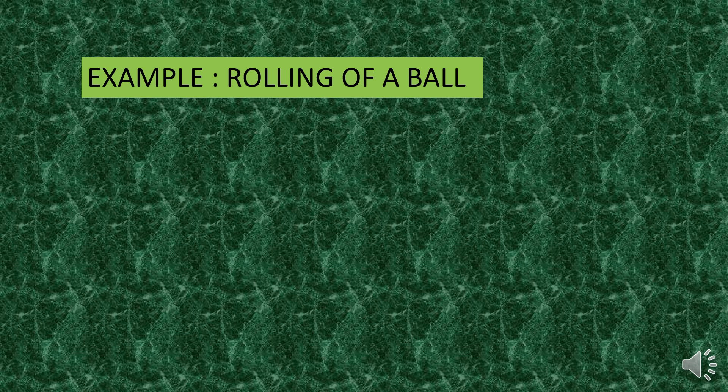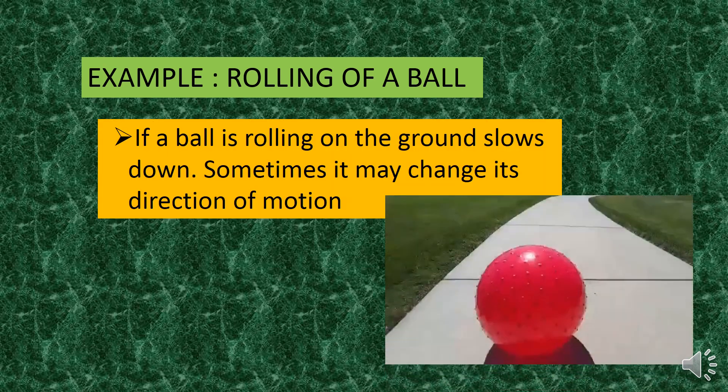The first example is rolling of a ball. If a ball is rolling on the ground, it slows down and sometimes it may change its direction of motion. If you observe a ball rolling on the ground, it slows down after travelling a certain distance. Or the ball may move faster, or the direction of the ball may get changed. Have you ever wondered what makes an object slow down, move faster, or change its direction of motion?